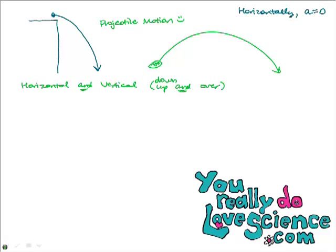In college physics or AP physics, they'll get into air resistance, which can cause some deceleration horizontally. But for the most part, if they don't mention air resistance, you assume it's not being taken into consideration and that horizontally there's nothing slowing the object down. So horizontally, the velocity is constant — it's not slowing down or speeding up because there's no force pulling or pushing it horizontally.